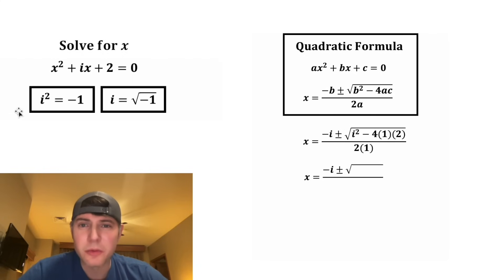And for this i squared, we know that i squared is equal to negative 1, so I'm going to change this to negative 1. And then we're going to subtract 4 times 1 times 2, which is equal to 8. And then on bottom, the 2 times 1 is equal to 2.